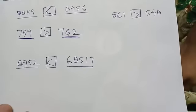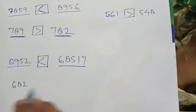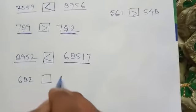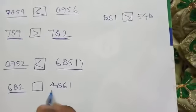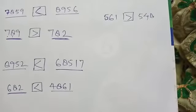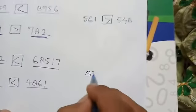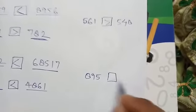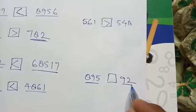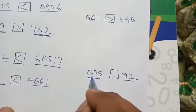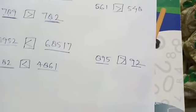Next example: here is 6, 8, 2 — that is 3 digits — and here is 4, 8, 6, 1 — that is 4 digits. So the 4-digit number is greater than the 3-digit number. Another example: here is 8, 9, 5 — 3 digits — and here is 92 — 2 digits. So 895 is greater than 92.